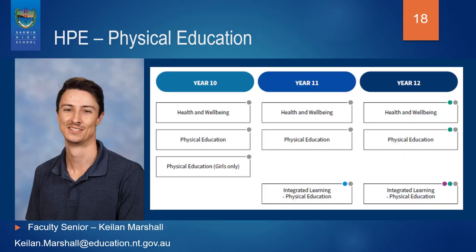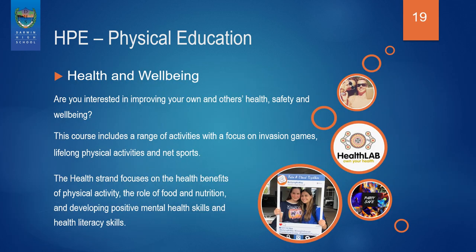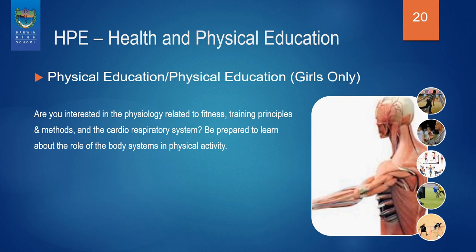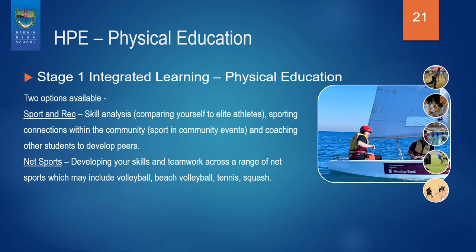Physical Education offers three subjects: Health and Wellbeing, Physical Education, and Stage 1 Integrated Learning Physical Education. Health and Wellbeing is a course that focuses on a range of activities including invasion games, long-life physical activities and net sports. The health strand of this course focuses on the health benefits of physical activity, the role of food and nutrition, and developing positive mental health skills and health literacy skills. In Physical Education and Physical Education Girls Only, students focus on the physiology related to fitness, training principles and methods, and the cardiorespiratory system. Stage 1 Integrated Learning Physical Education has two options available: Sport and Rec, and Net Sports. Stop the video here to read the difference between the two courses.